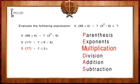5 times 17 equals 85, and negative 7 times 3 equals negative 21.